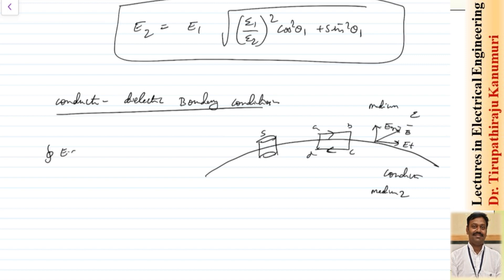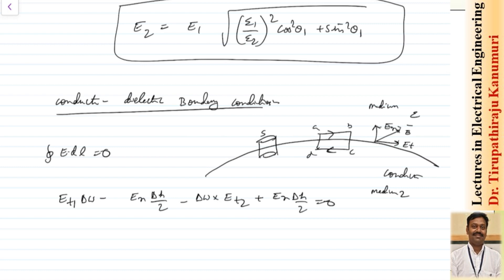The closed line integral of E dot dl equals 0. Writing this out: Et1 times delta w minus En times (delta h / 2) minus Et2 times delta w plus En times (delta h / 2) equals 0. As h tends to 0 the height terms cancel. Since inside the conductor the tangential component Et2 equals 0, the result is Et1 equals 0, and therefore Dt1 also equals 0.